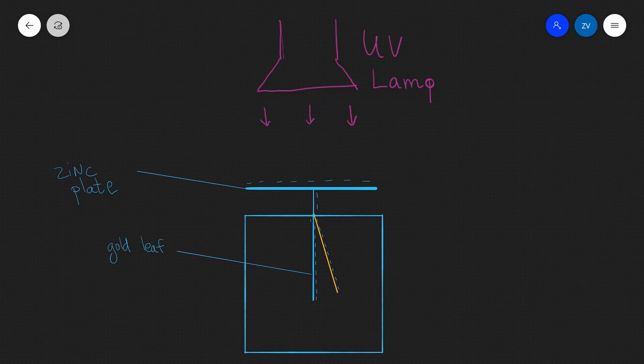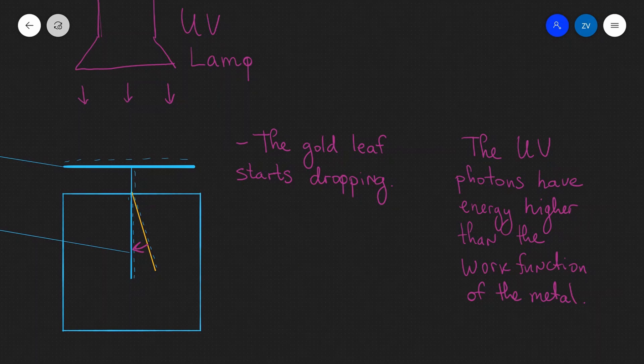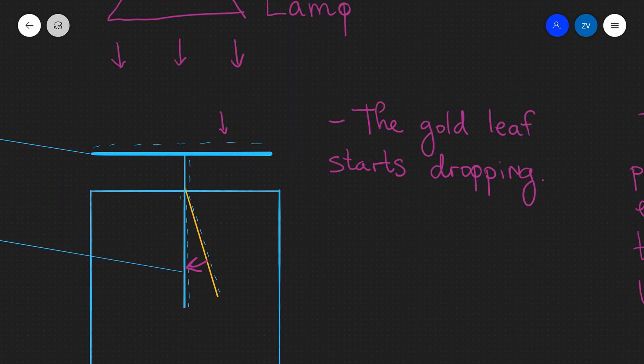Now let's have a look at the case when we replace the visible light with a UV lamp. We switch the UV light lamp on and one of the first things that we notice is that the gold leaf starts dropping virtually instantly. So this leaf starts dropping. The reason why the gold leaf starts dropping is because the UV photons have energy which is higher than the work function of the metal. So what happens is actually that one of those individual photons interacts with an electron and then that electron then becomes ejected from the surface. So let's say that this photon is going to react with this electron and is going to eject it. The gold leaf is going to start dropping.